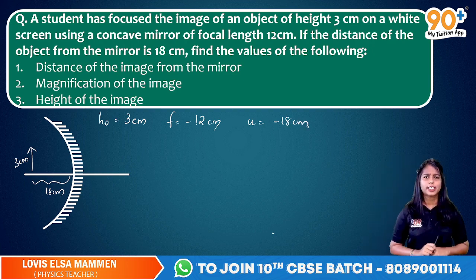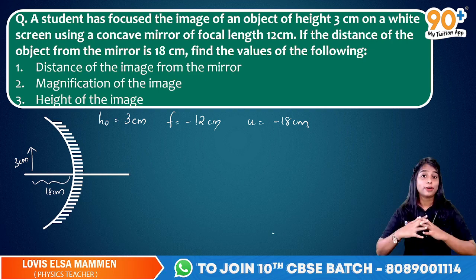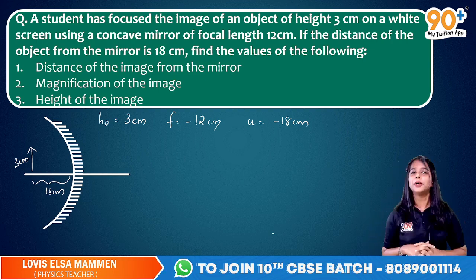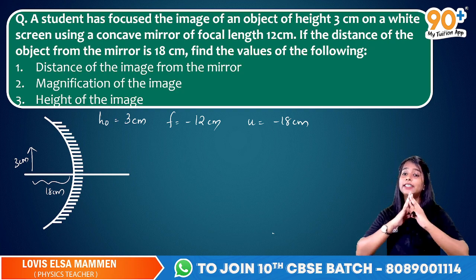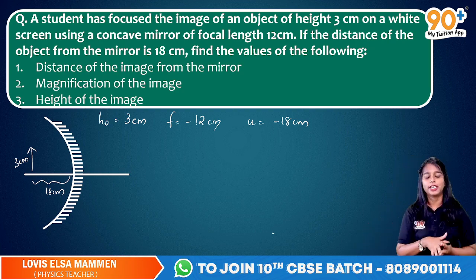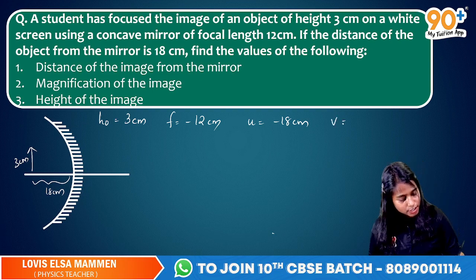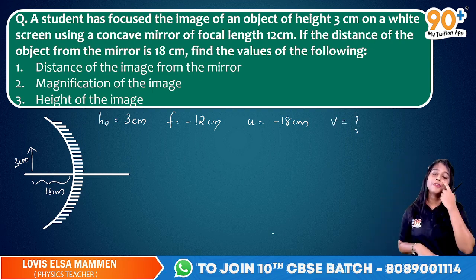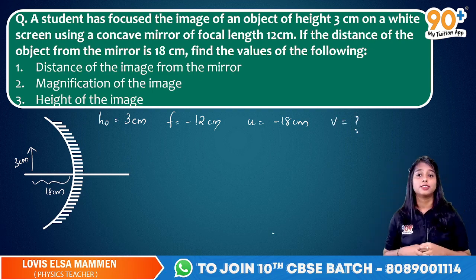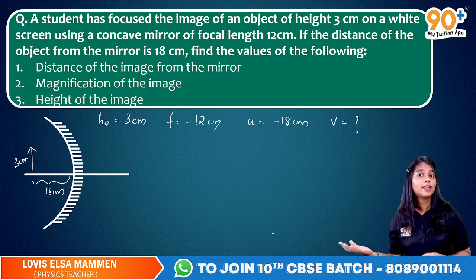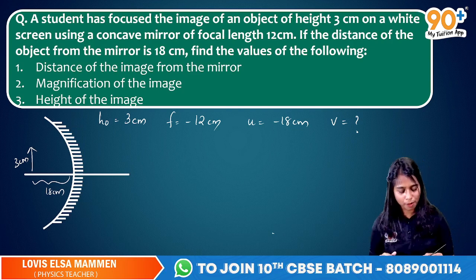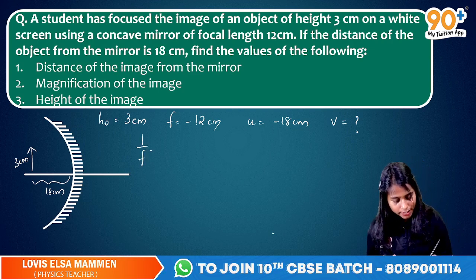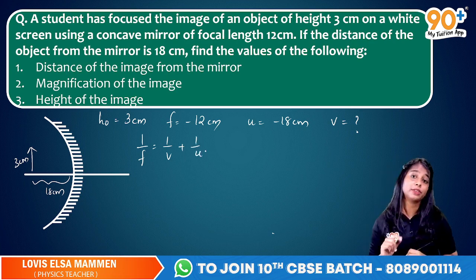Why is U minus? Because your object is to the left of the mirror. You are asked to find the distance of the image from the mirror — that is, the image distance. How will you find image distance if object distance and focal length is given? By using the mirror formula. Here is the mirror formula: 1 by F is equal to 1 by V plus 1 by U.